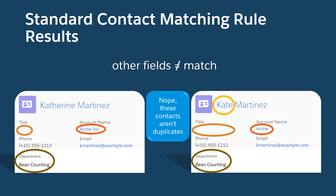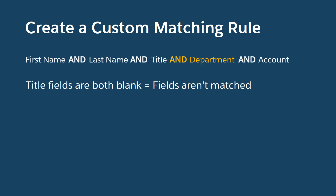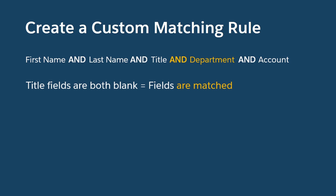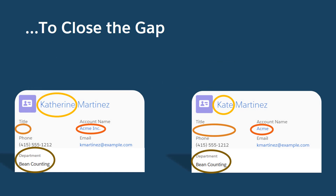Now let's create a custom matching rule. We'll change the equation by adding a field, and we'll change the matching criteria on the title field. Our custom rule will catch duplicates that the standard contact matching rule misses.